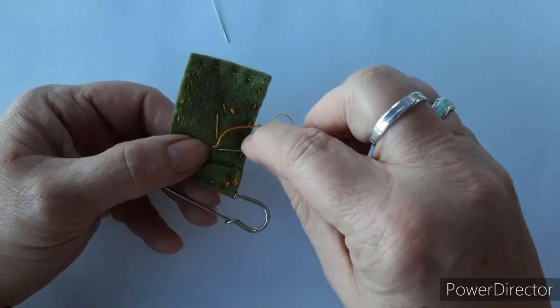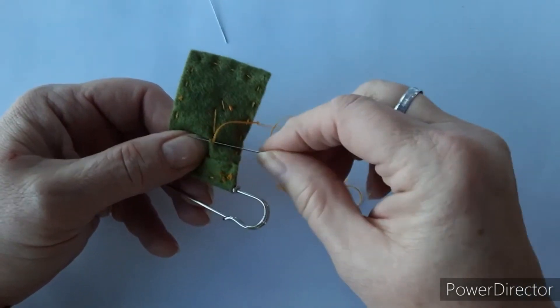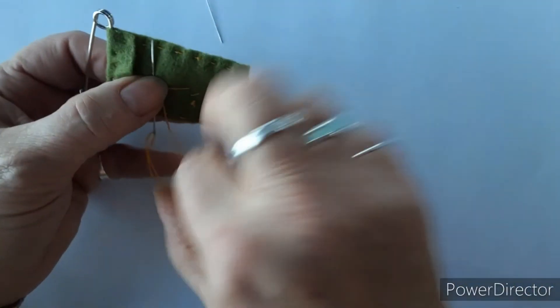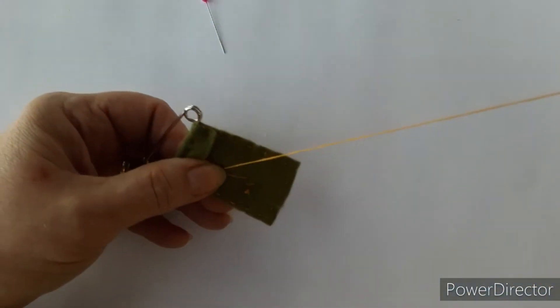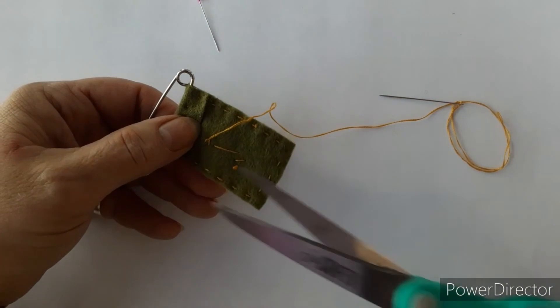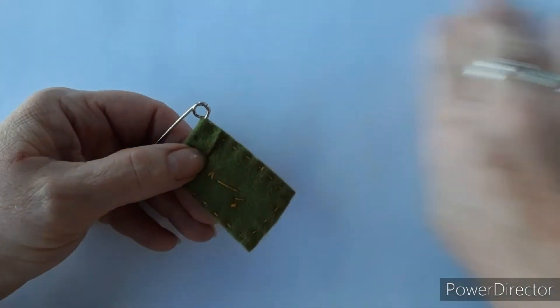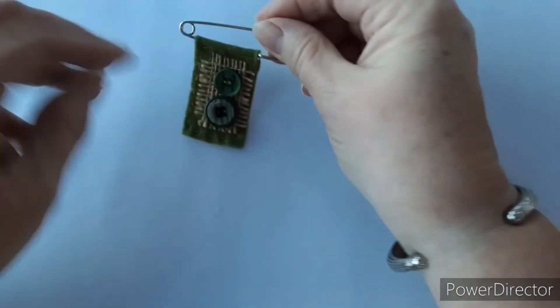Once you've stitched on, go through to the back. Make a little stitch and thread around to make a knot to secure. Snip it. And there you're done.